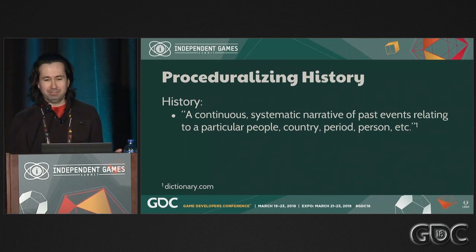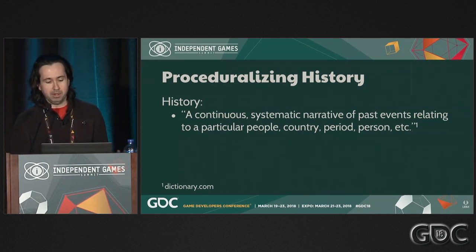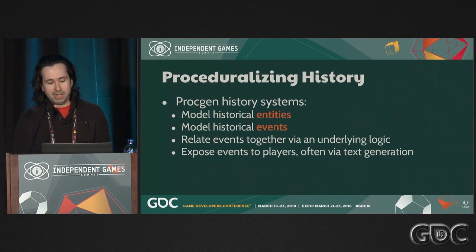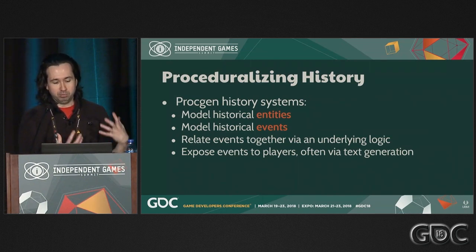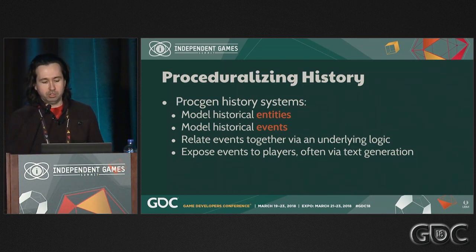It's a bit corny to start with the dictionary definition, but when talking about something as abstract as history, I think it's useful to get on the same page. The definition I liked best was from dictionary.com: 'a continuous systematic narrative of past events relating to a particular people, country, period, person, et cetera.' When we started to think about how to proceduralize history and study it deeply, we came upon a model I'm going to talk about now. This is a subfield of procedural generation that I think is in its infancy — there's no real canonical formulation for a procedural history system.